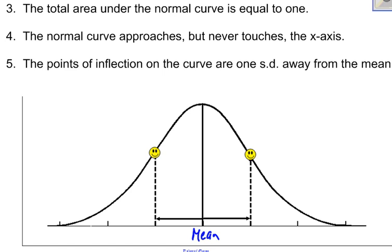And they're not exactly in the same place when I put them on there. There they go. That looks a little bit better. So if I go one standard deviation, this would be one standard deviation away. This would be one standard deviation away in the other direction. I am at the point of inflection.